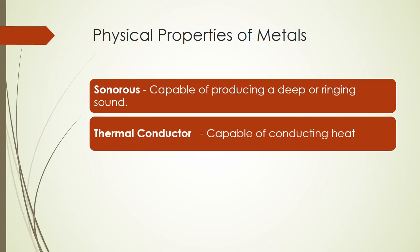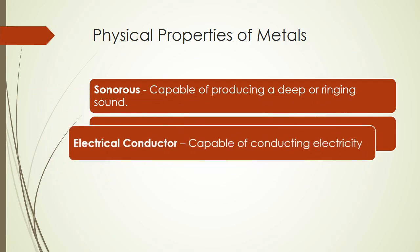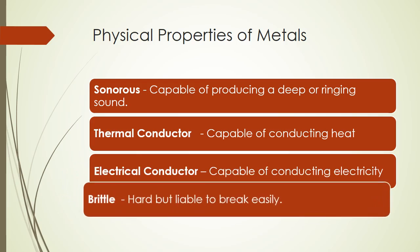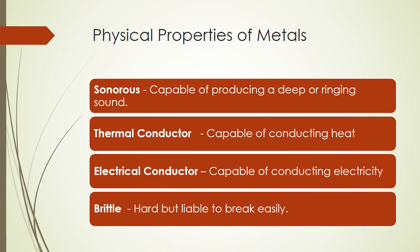A thermal conductor is capable of conducting heat. An electrical conductor, as the name suggests, is capable of conducting electricity. Brittle means that a substance can break easily — though it may be hard, it can still break easily.